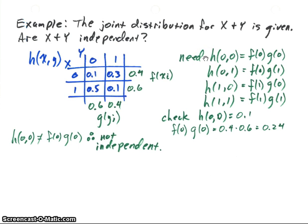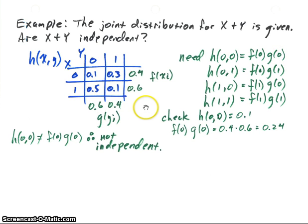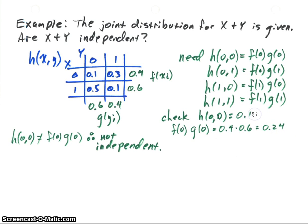So we've got 0.6 and 0.4 for g(y_i). Now what has to be true for independence? For each individual cell — say for X equals 0 and Y equals 0, we've got 0.1 — that value has to equal our distribution function for X at 0 times our distribution function for Y at 0: f(0) times g(0). So we have f equal to 0.4 and g of Y equal to 0.6. If we multiply those together, we should get 0.1, but we actually get 0.24.